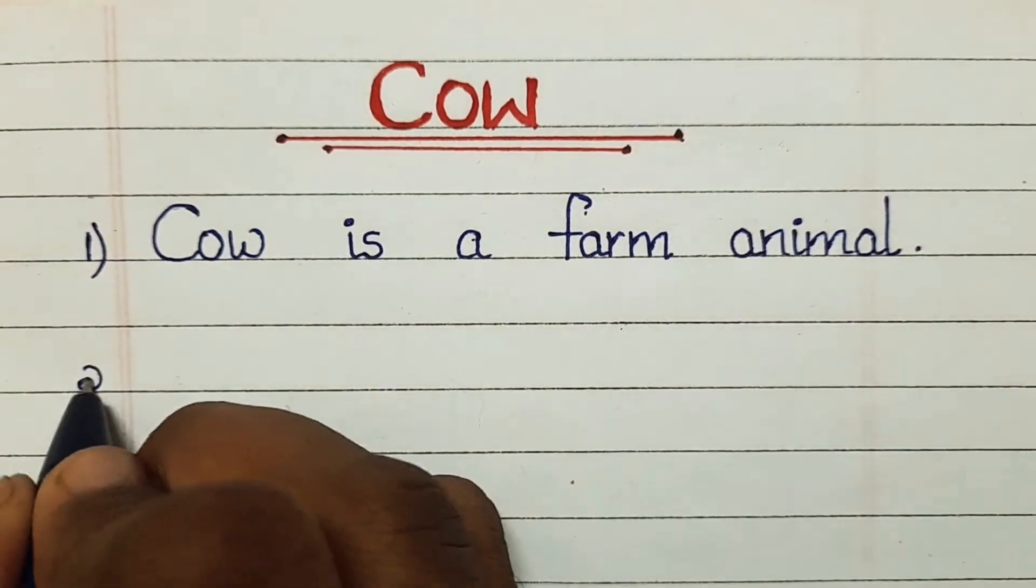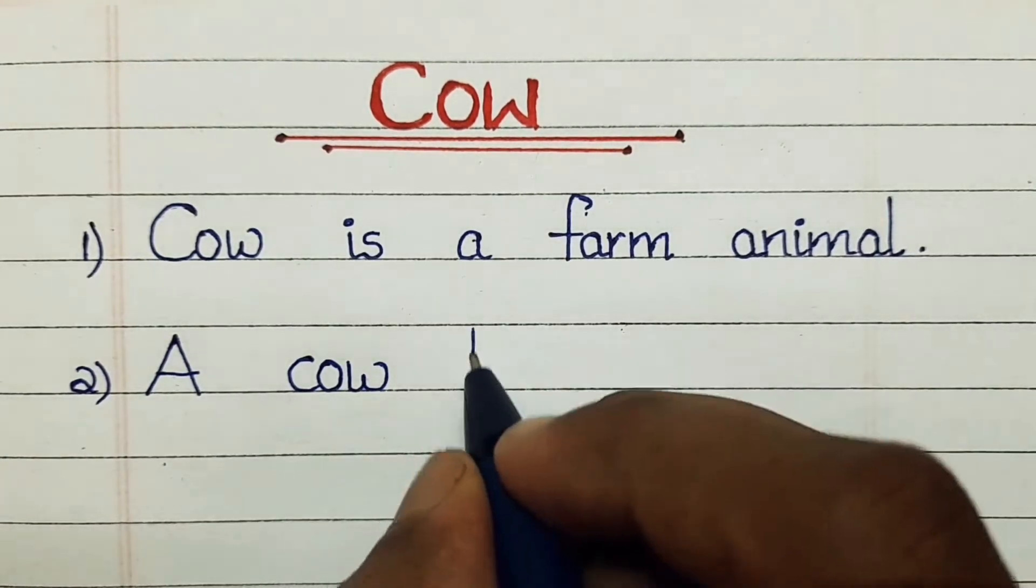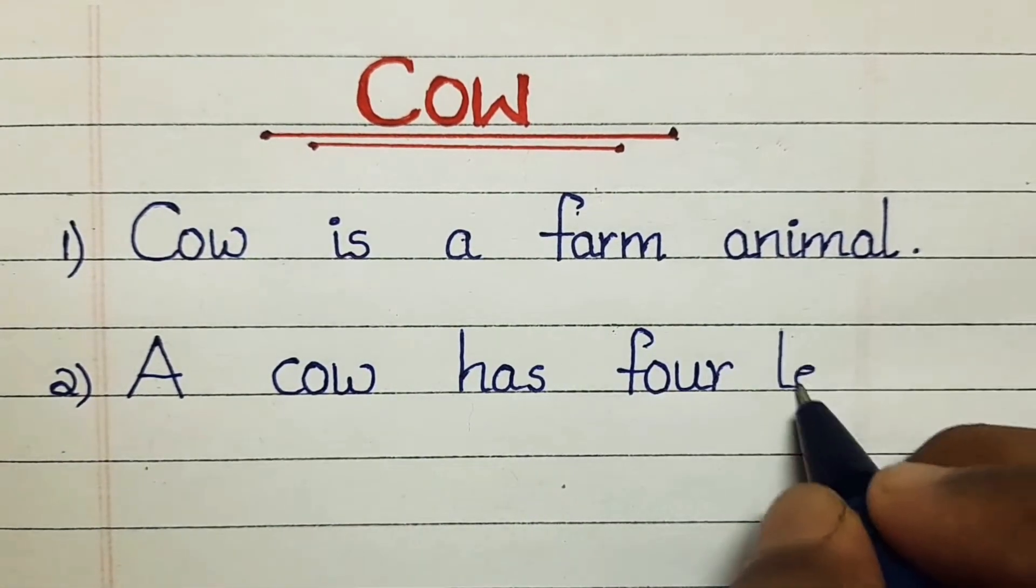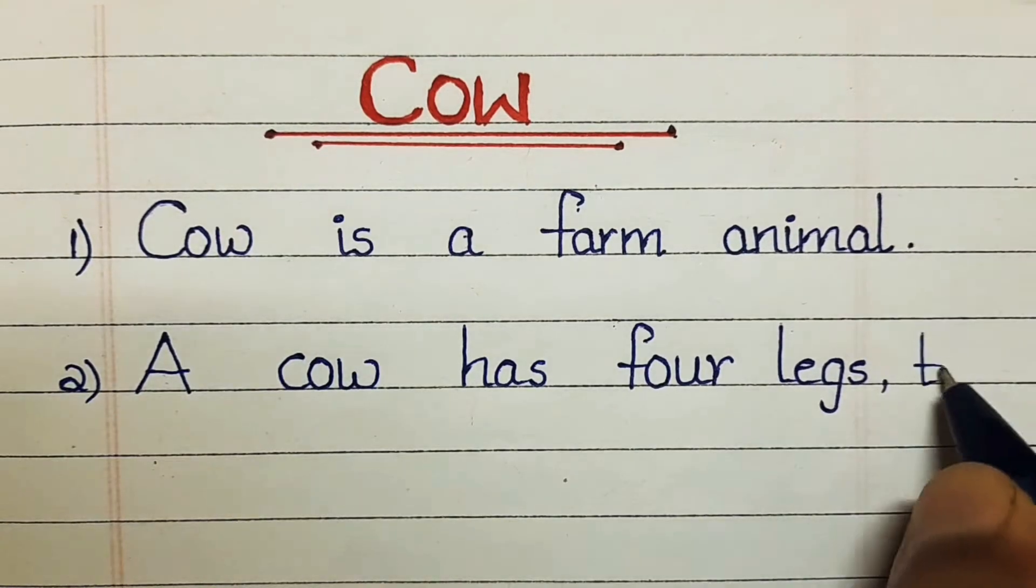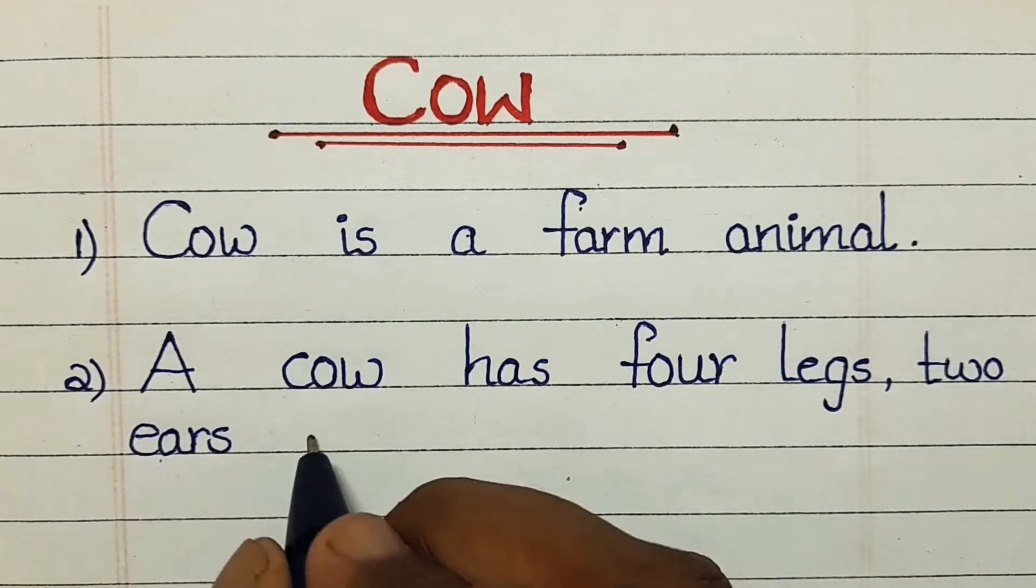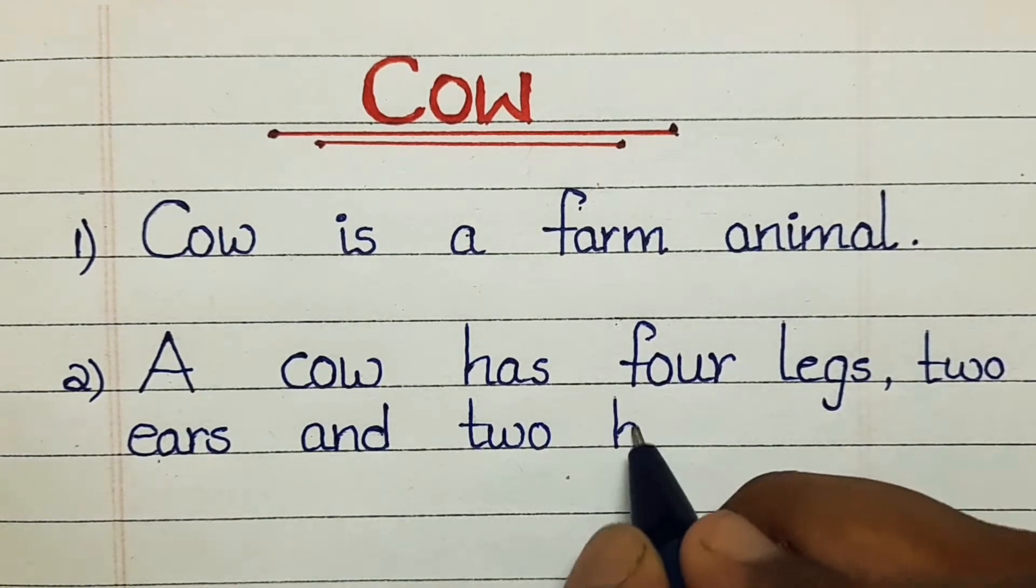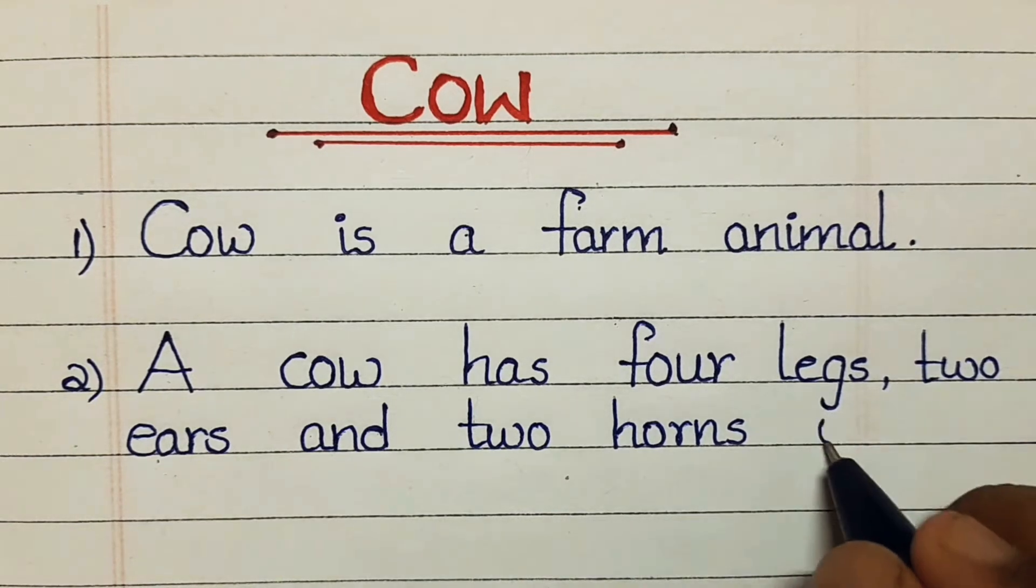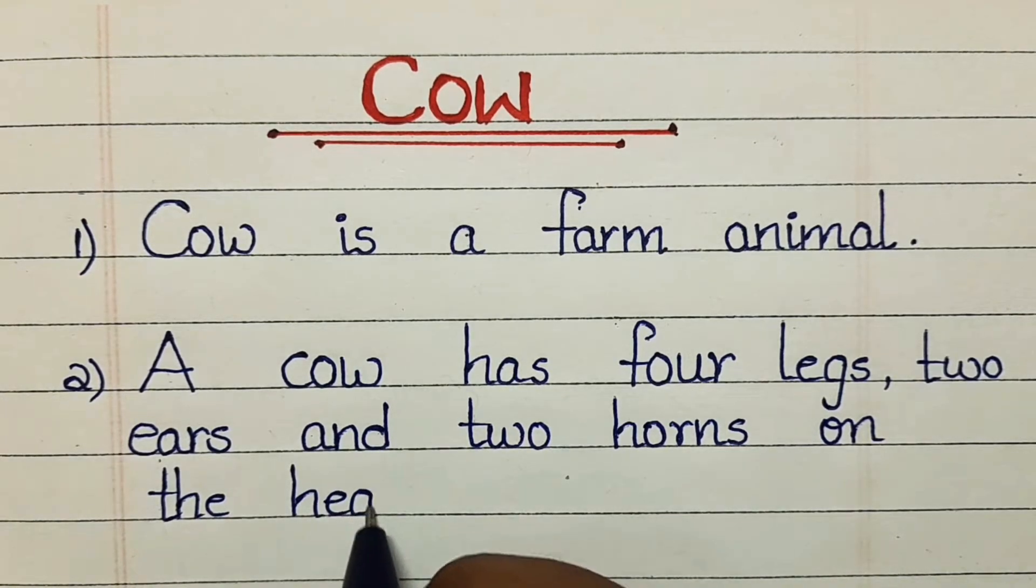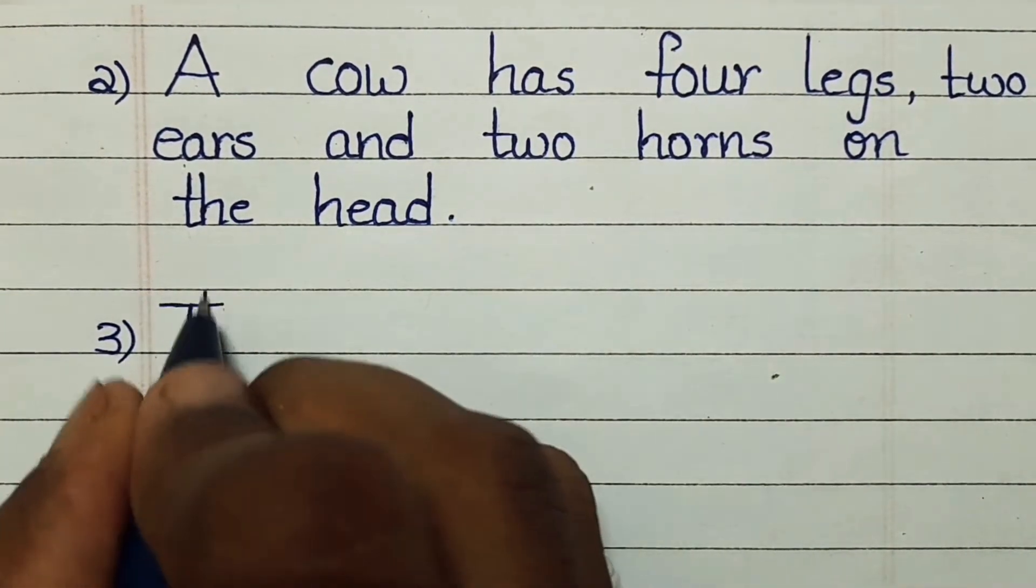Cow is a farm animal. A cow has four legs, two ears, and two horns on the head.